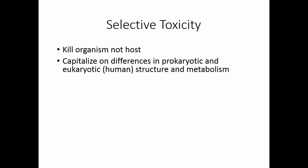Most of the things we're trying to kill are bacterial — they're prokaryotic cells. Humans are made of eukaryotic cells, and there are slight differences in the structure and metabolism of the two cell types that we can use to our advantage.